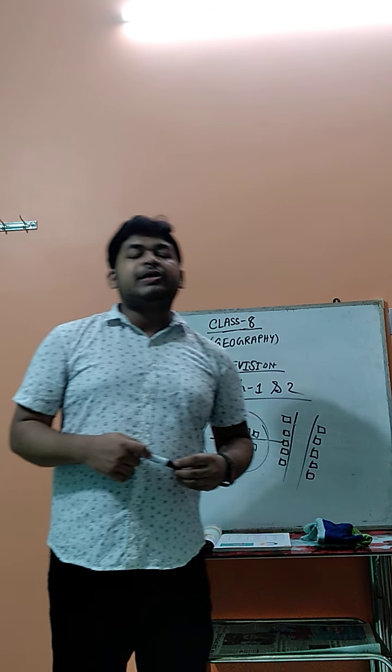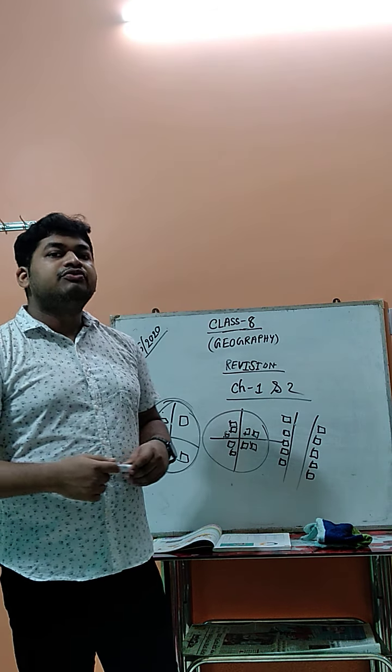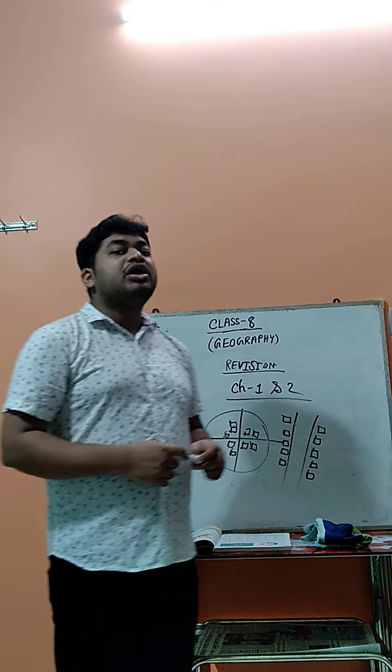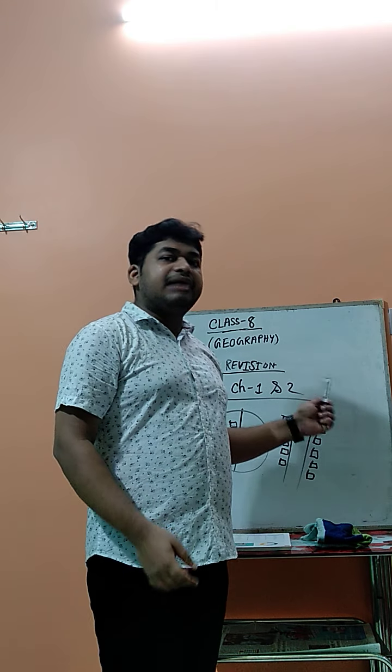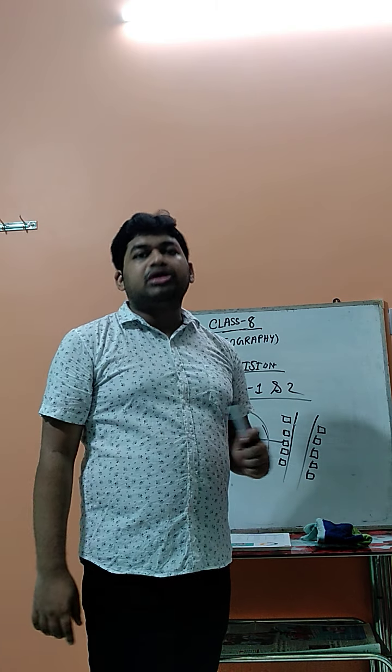This drainage pattern is divided into three parts. The first is the dendritic type of drainage pattern. The second is the radial type of drainage pattern, and the third one is the trellis type of drainage pattern.